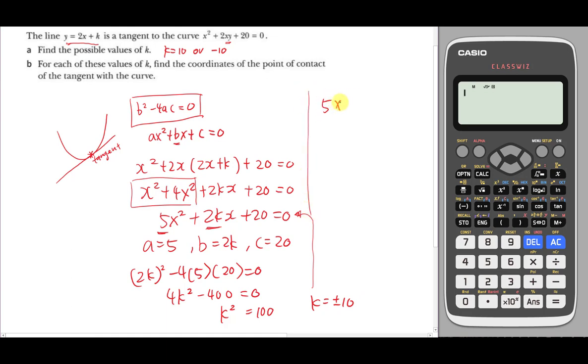When k = 10, then I will have 5x² + 20x + 20 = 0. Then divide the whole equation by 5: x² + 4x + 4 = 0. Then I will just factorize it. This one should be (x + 2)(x + 2) = 0. Then I know my x = -2.